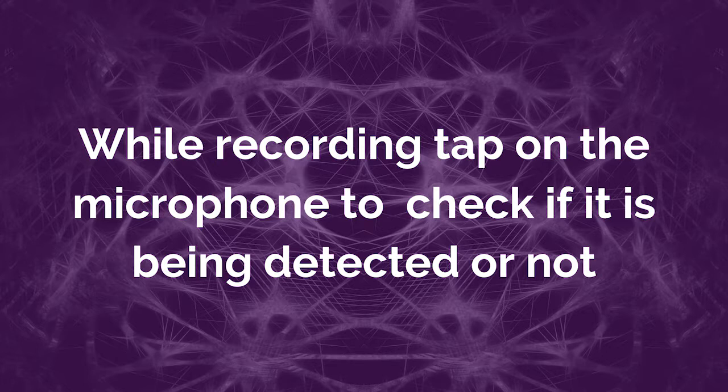Once you have set up the Open Camera app, it is absolutely important that you check if the microphone is being detected. There is no digital way of checking that — you can only check it physically. You need to tap on the microphone while recording to check if it is being detected. For example, if I tap on the microphone, you will be able to hear the disturbance. When your external microphone is working, the internal microphone will not work, and vice versa. Both of them never work together.